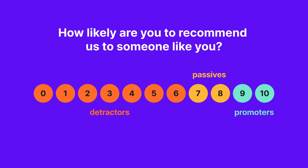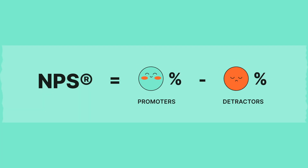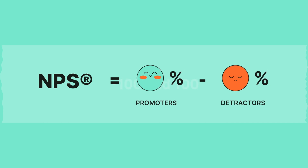The formula for NPS calculation is as follows: the percentage of promoters minus the percentage of detractors. The result is a number between negative 100 and positive 100.